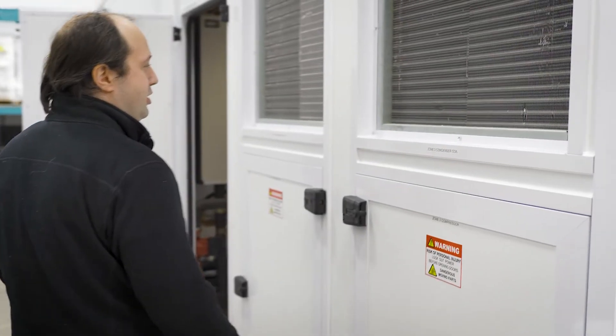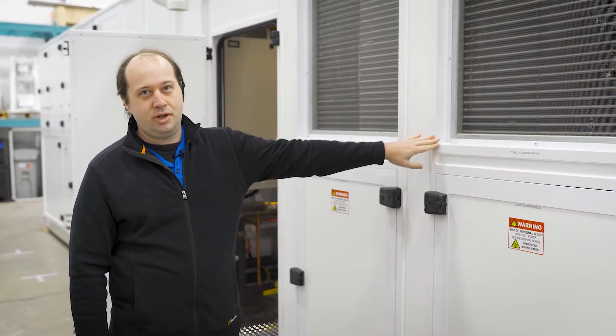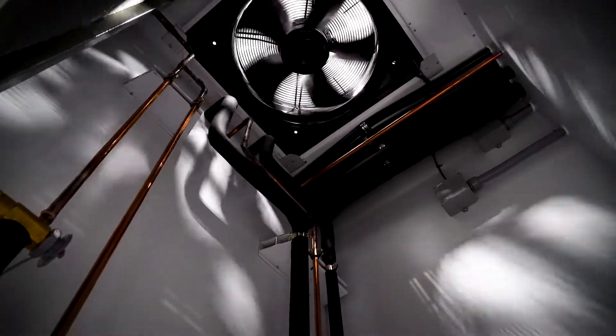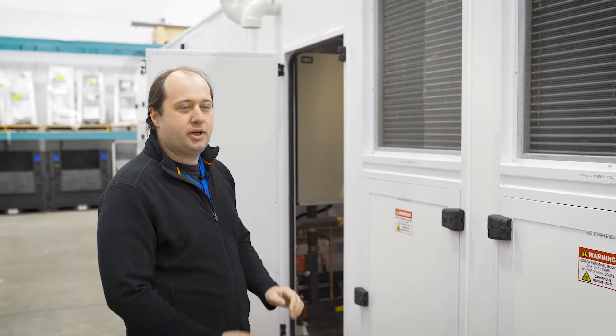On this end of the unit is the packaged condensing unit for the three zones that we're supplying air into. This side is zones one and two. The other side is a coil for zone three.